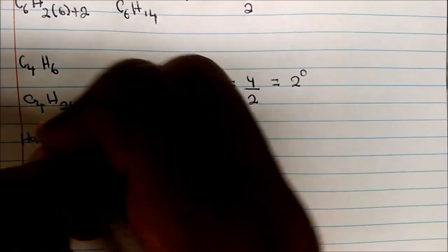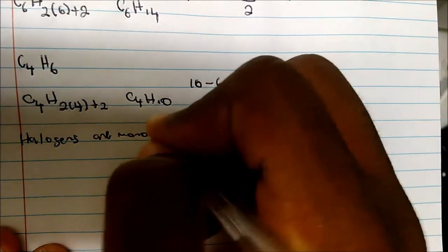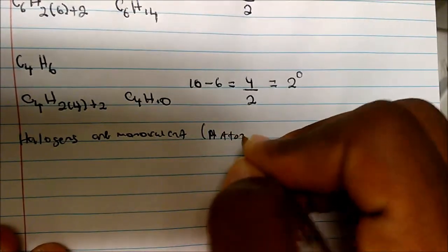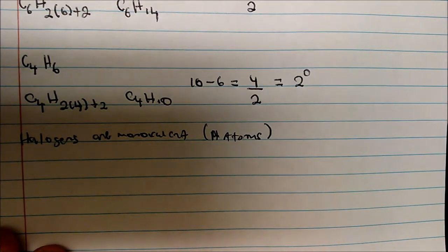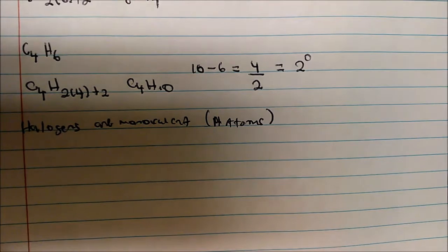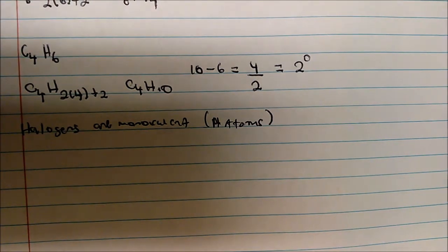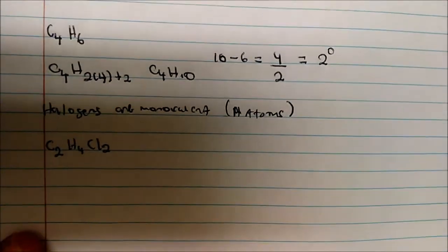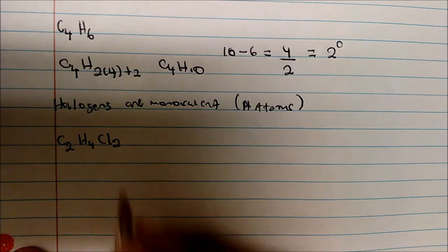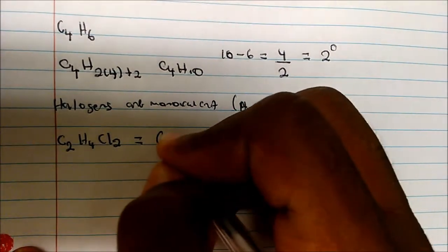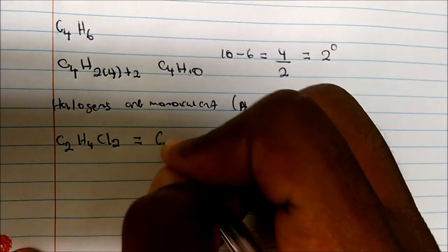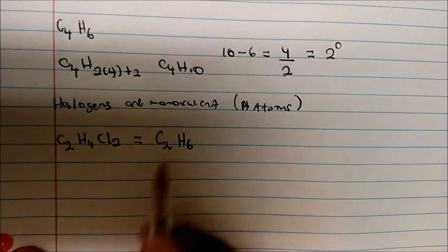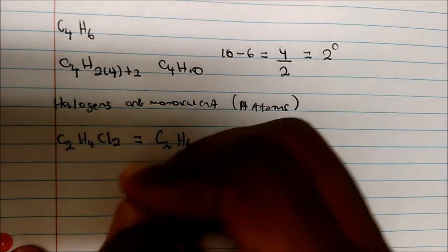Now let's introduce a new concept: halogens are monovalent, which means they are treated as hydrogen atoms for the purpose of calculating degrees of unsaturation. We're not saying halogens are hydrogens — just that they are treated as such. So if you're given C2H4Cl2, you can rewrite it as C2H6 for calculation purposes.